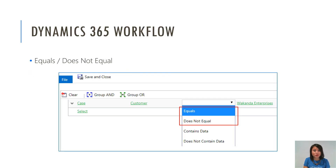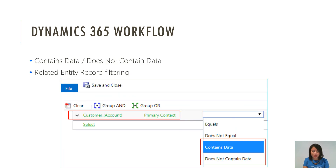The first item I will cover is how to perform equals or does not equal in flow — something you can already do in Dynamics 365 workflows today. The second item I will show you is contains data and does not contain data. I covered this in an earlier WTF episode where you were required to use edit in advanced mode, but that is no longer available in the Flow Condition Builder, which is why I'm covering it again.